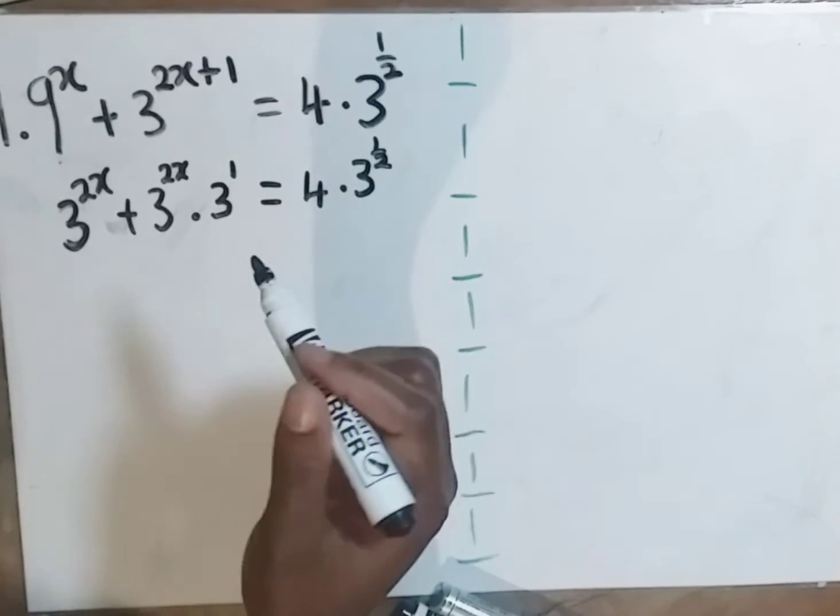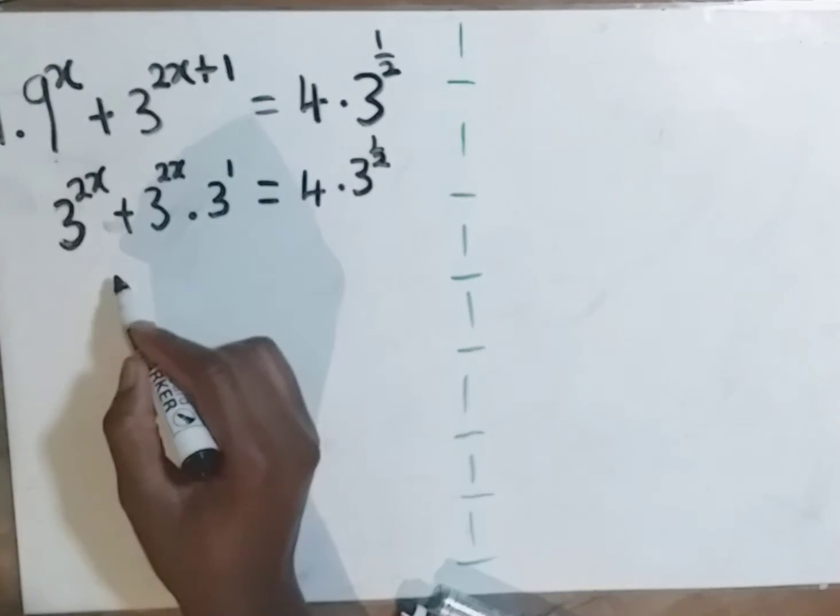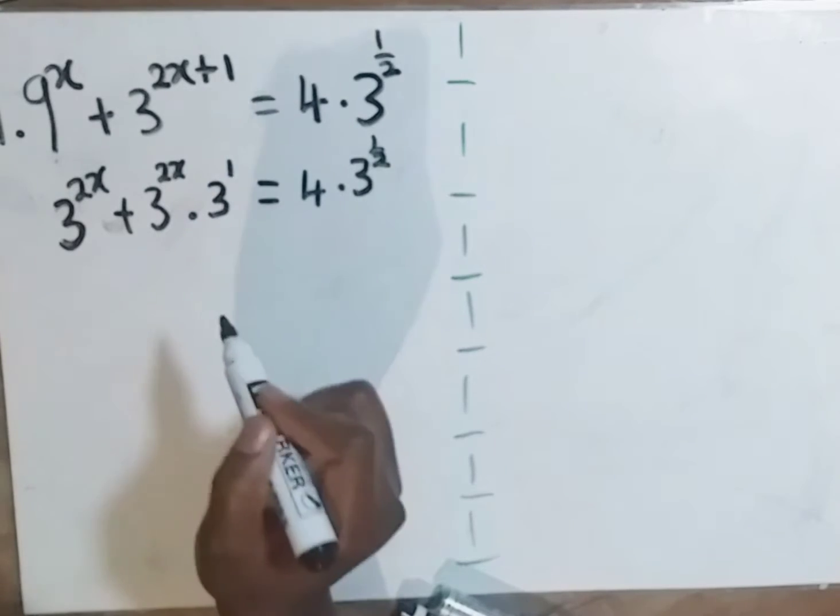Now let's factorize. As you can see here on our left hand side, 3 to the power 2x is common.